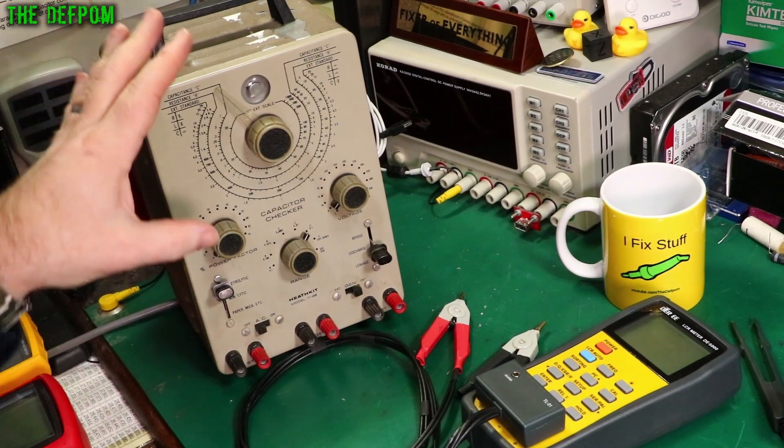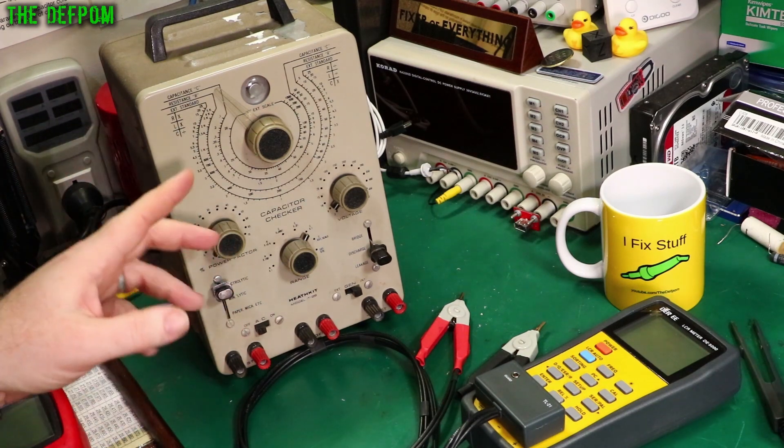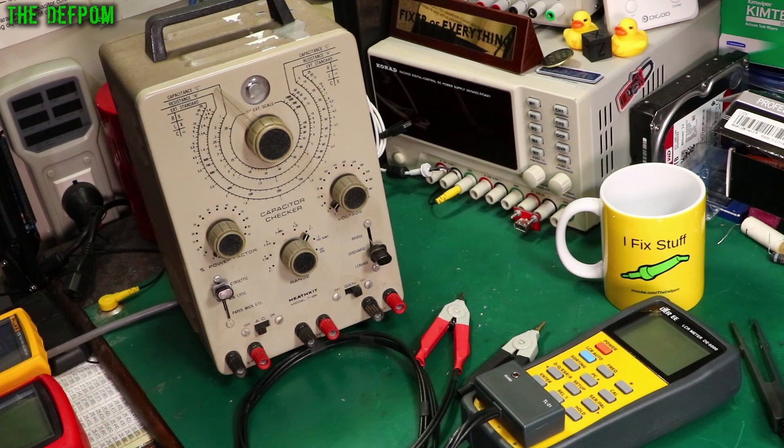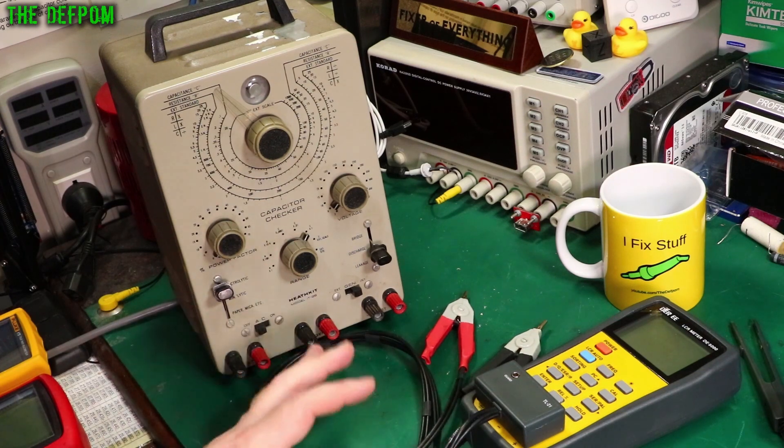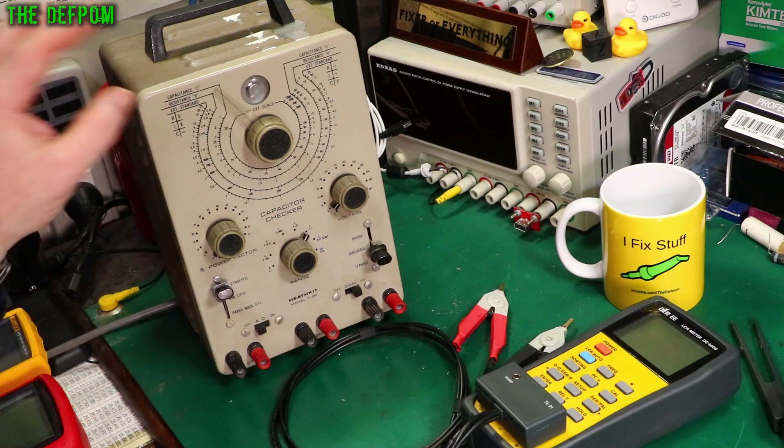And over here is another capacitor tester. This is an old school one. This is I think 70s, maybe late 60s. This does resistance and capacitance as well. And it does leakage tests and things like that, which is something none of these other meters can do.